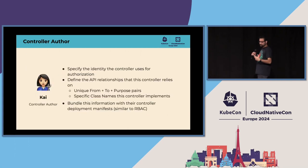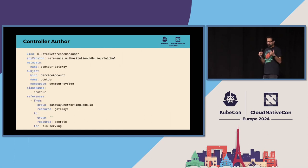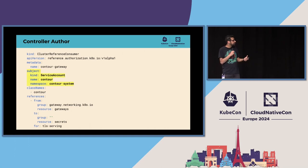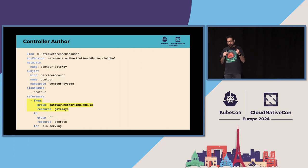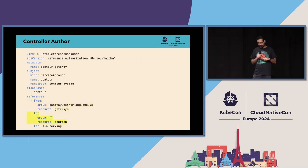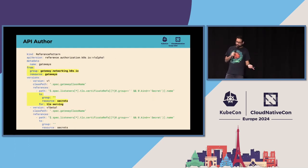The controller author writes the code, builds Docker images, Helm charts, all the YAML. What they understand really well is the identity of the controller — in Kubernetes we refer to that as the subject. In this example, we have the Contour service account. Contour is a gateway controller that supports class, so it's the Contour class. We describe: I want access to secrets referenced from gateways for the purpose of TLS serving. The from, to, and for on both the controller and API author resources match up.